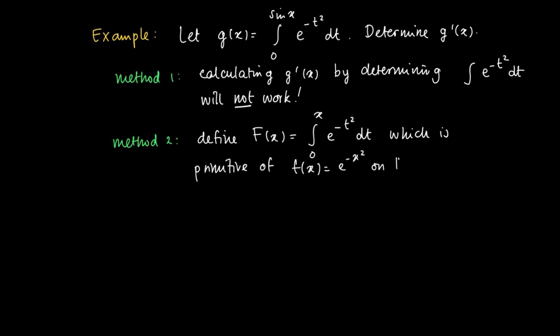So we know that the derivative of capital F is e to the power minus x squared on R. Now we may use the chain rule of differentiation to find the derivative of g. Since the derivative of g is the derivative of the composition of capital F and the sine of x.